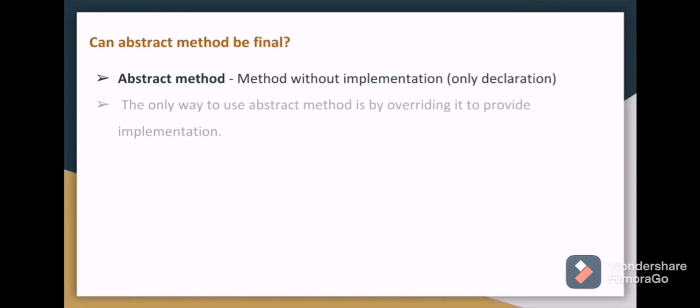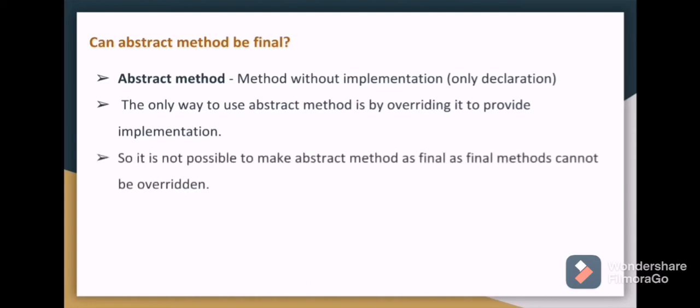Can abstract method be final? For this first we need to know what is abstract method. It is method without implementation, that is there will not be any body for this method, only declaration will be there, and to use this abstract method we need to override. But final method means it cannot be overridden, right? So it is not possible to make abstract method as final as final methods cannot be overridden.